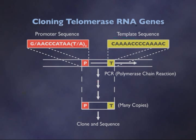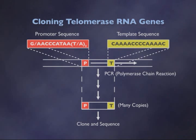The Tetrahymena telomerase had been found by Blackburn and Greider. We were trying to find the telomerase RNA from Oxytricha and from Euplotes. The one portion we could count on was that it would have a template region within the gene encoding the telomerase RNA that would have C's and A's, because they would have to template the addition of the G4T4 strand at the end of the chromosome. That was a very reasonable expectation.